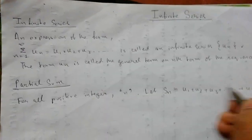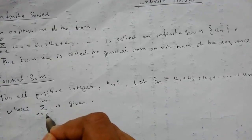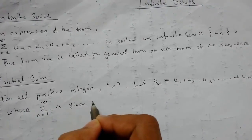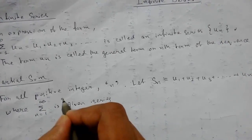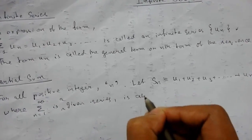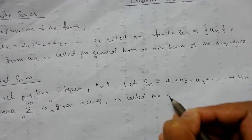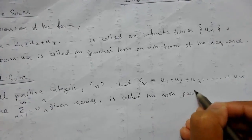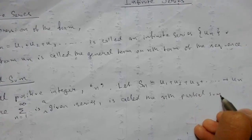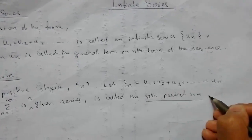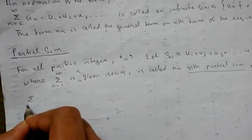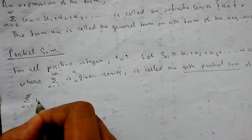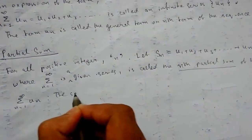Where summation n from 1 to infinity is a given series, this is called the nth partial sum of the series, that is summation n from 1 to infinity UN. The sequence